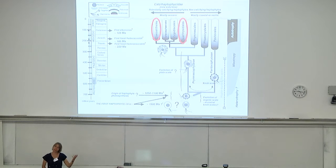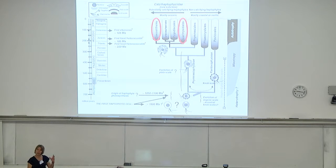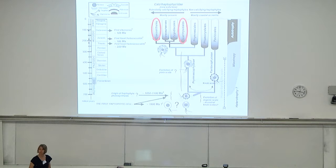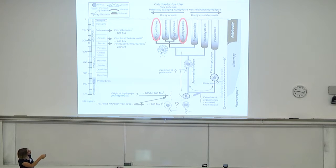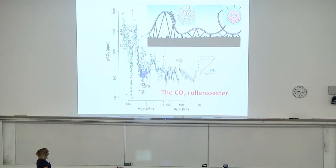When did coccolithophores start generating calcium carbonate? This phylogenetic tree of the haptophytes shows the evolution of different lineages. The pavlovales are a very ancient lineage. There are two lineages of cells which create calcium carbonate: the coccolithales — the true coccolithophores — and the isochrysidales, which include Emiliani huxleyi and the reticulofenestrids. They evolved around the Triassic or Jurassic, with the first fossil heterococcolith about 220 million years ago — that's when they would have had their major impact stabilizing the carbon system.